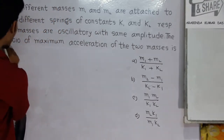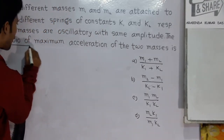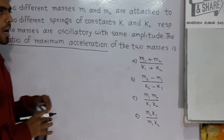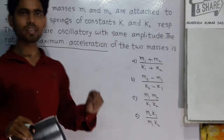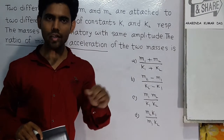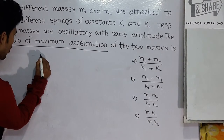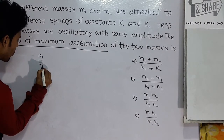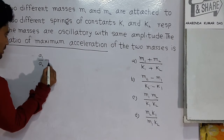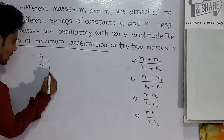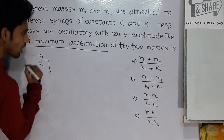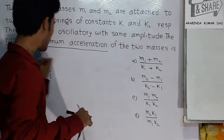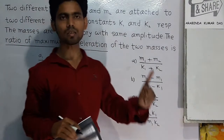The ratio of maximum acceleration — if acceleration is denoted by small a, then a1 upon a2. The dimension of the ratio is 1 (dimensionless). Now we will check which of the 4 options has matching dimensions.